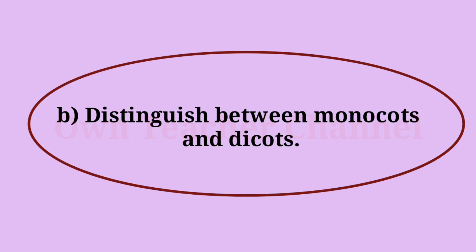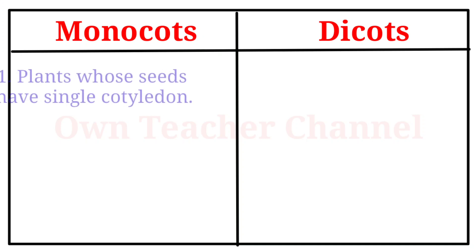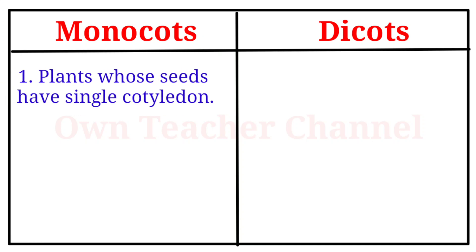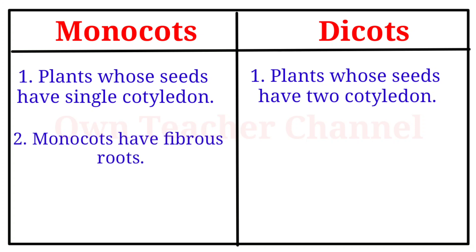(B) Distinguish between monocots and dicots. Plants whose seeds have a single cotyledon are monocots. Plants whose seeds have two cotyledons are dicots. Monocots have fibrous roots.